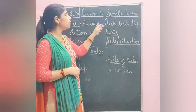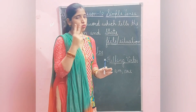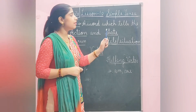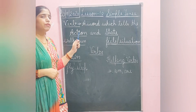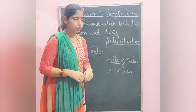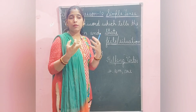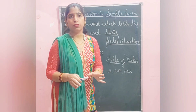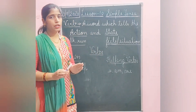A verb is a word which tells us the action and state. As we studied in the last chapter, there are two types of verb: being verb and having verb. Being verb tells us the state of the subject — noun or pronoun — and having verb tells us about the action performed by the subject. For example: walk, run, sleep, cry — these show action — and state means the situation of the subject, a noun or pronoun.